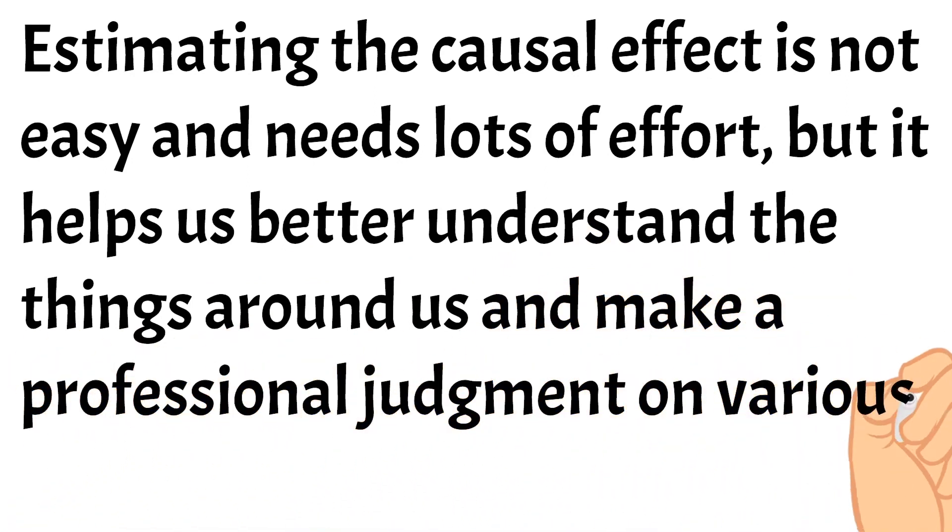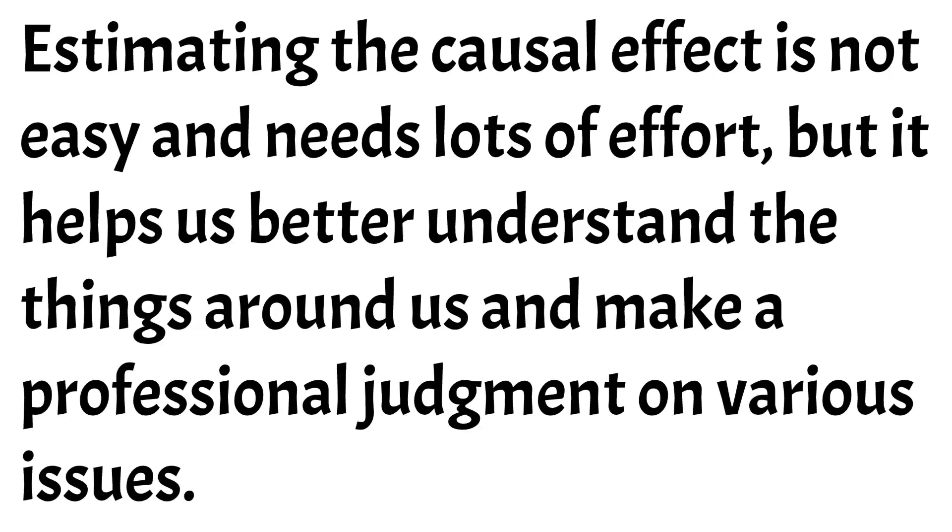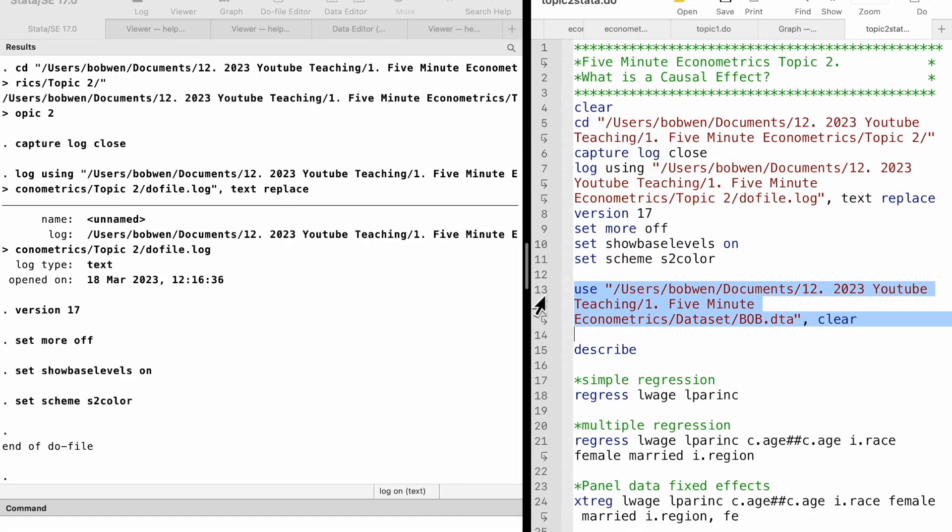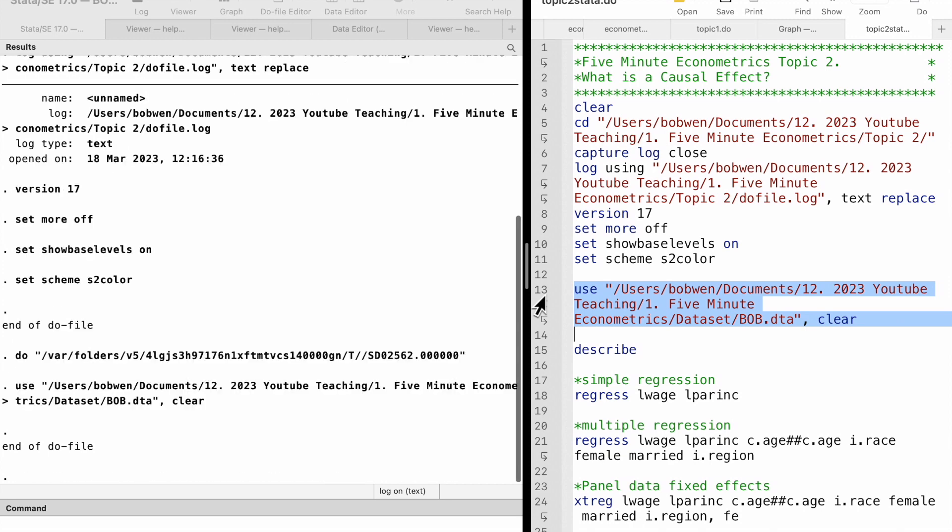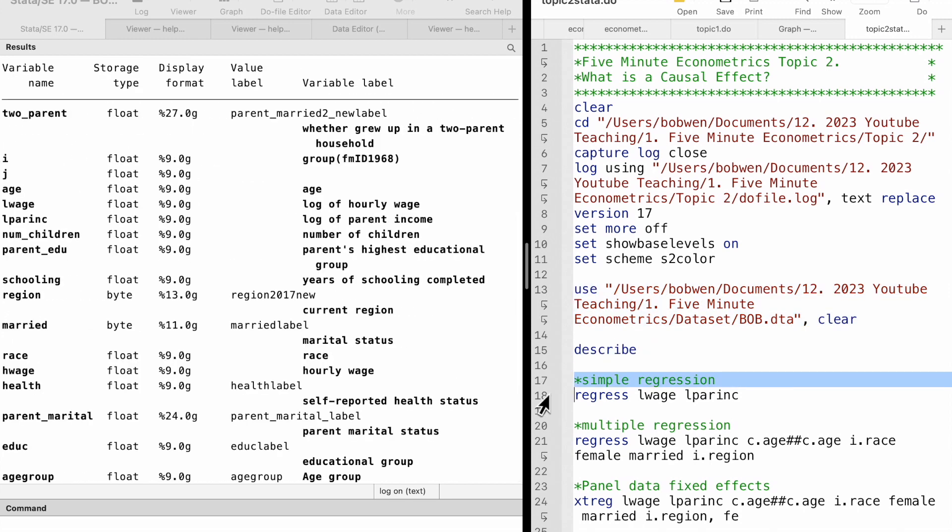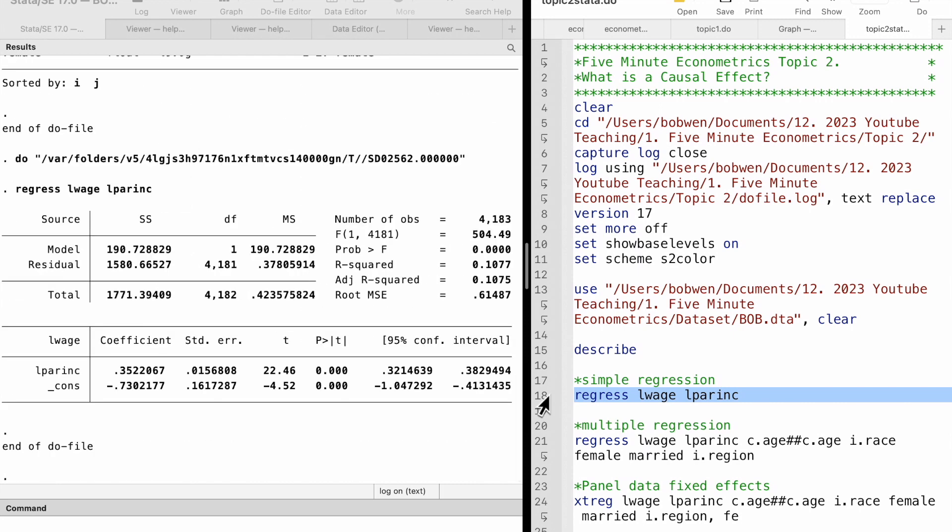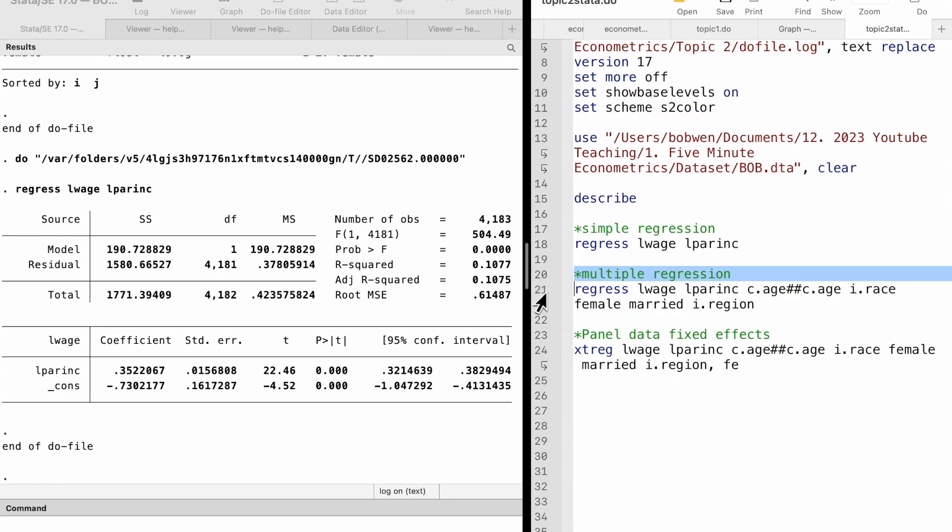Finally, I would like to show you an example trying to estimate the causal effect of parents' income on their adult children's earnings in Stata. The dataset contains information on workers' hourly wages and their parents' average income in their cycle years. The simple regression of log wage on log parent income gives an estimate of 0.35. It represents the correlation between the two variables, but not the causal relationship.